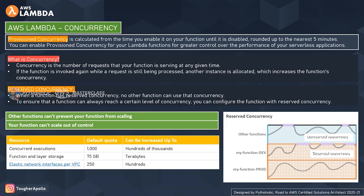Imagine concurrency values as a pool of numbers — for example, 100. All 100 when not reserved is considered unreserved. If you assign 50 of them to a function, that 50 becomes reserved and the remaining 50 stays free and unreserved. When a function has reserved concurrency, no other function can use that concurrency.